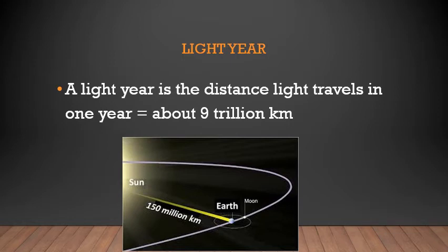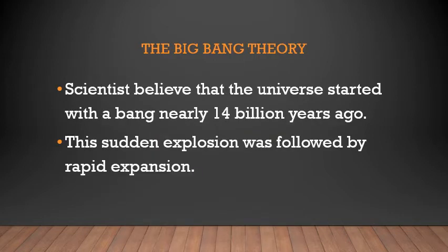If you have to measure the distance from Earth to other planets, or from Earth to other galaxies, all these distances are measured in light years. A light year is the distance light travels in one year — about nine trillion kilometers. Scientists believe the universe began with a Big Bang which took place nearly 14 billion years ago. There was a blast in space which led to the present universe — galaxies and everything came out from that explosion.